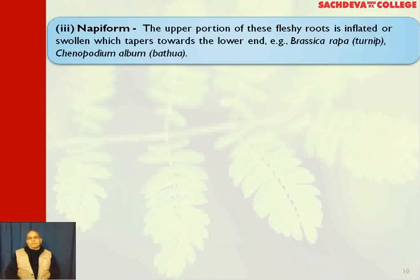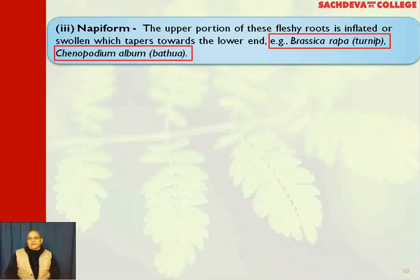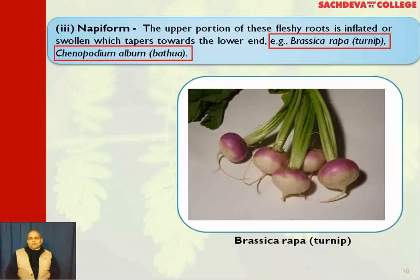The napiform type: the upper portion of these roots is inflated or swollen, which tapers towards the lower end. An example is Brassica rapa, which is called turnip — 'shalgam' in Hindi. Another example is Chenopodium album, which is a winter leafy vegetable called 'bathua' in Hindi. Here is the photograph of Brassica rapa — a napiform taproot.